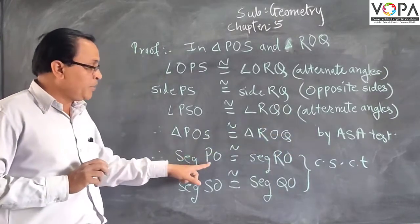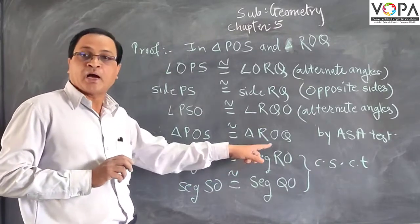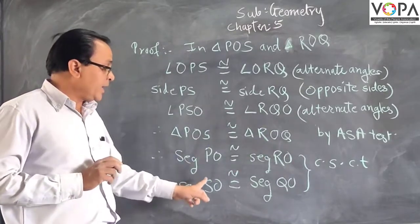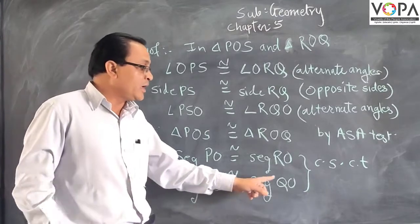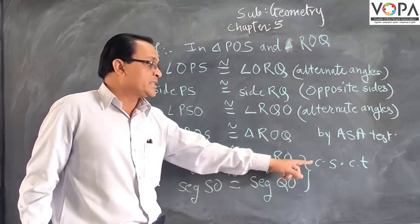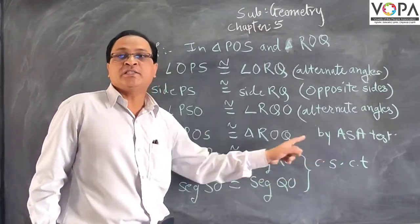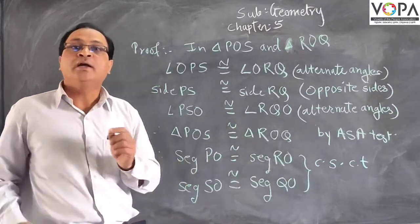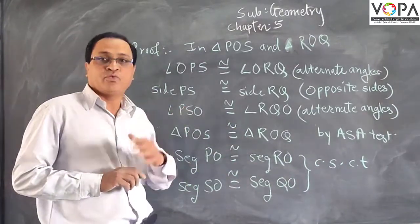Therefore, segment PO is equivalent to segment RO and segment SO is equivalent to segment QO by CPCT. That is corresponding sides of congruent triangles. Again, we will see the proof.